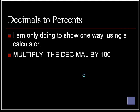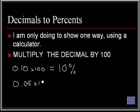If my decimal is zero point one zero, I multiply that by a hundred. And I'm going to get ten percent. My decimal is zero point zero five. I multiply that by a hundred. I'm going to get five percent. My decimal is zero point seven one six. I'm going to multiply that by a hundred. And I am going to get seventy one point six percent.